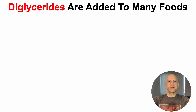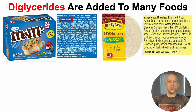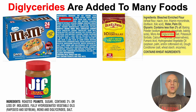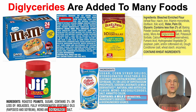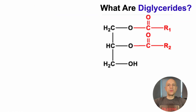Diglycerides are added to many foods, including ice cream sandwiches, flour tortillas, peanut butter, coffee creamer, and many other foods. But what are diglycerides? That's what we'll see here.